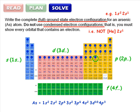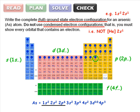Done? Check your answer by adding up all the subscripts. Does 2 plus 2 plus 6 plus 2 plus 6 plus 2 plus 10 plus 3 equal 33? It does. So we're done.